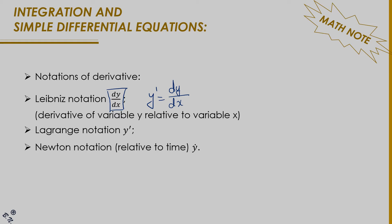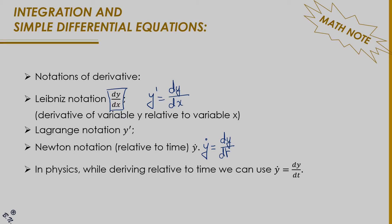What we use a lot in physics is the dot notation, known as Newton notation: dy/dt. Whenever you write y-dot, that means you are deriving with respect to time. In physics, while deriving relative to time, we use y-dot.